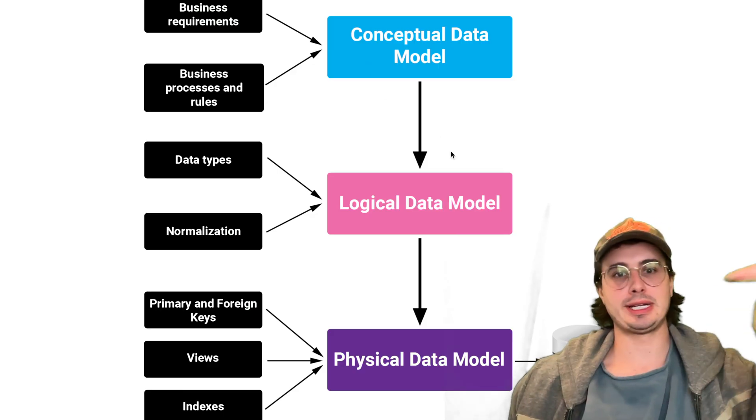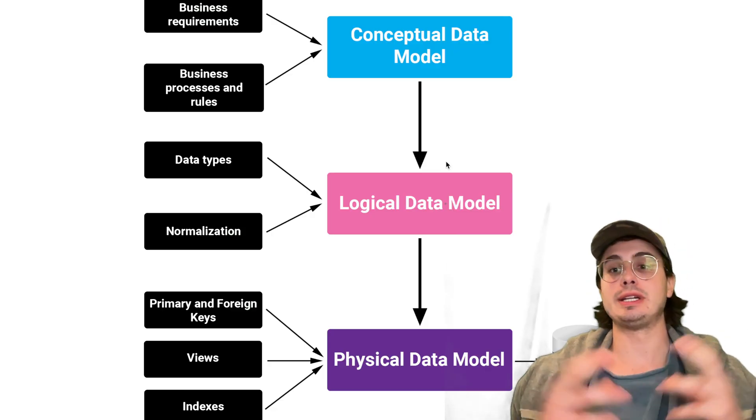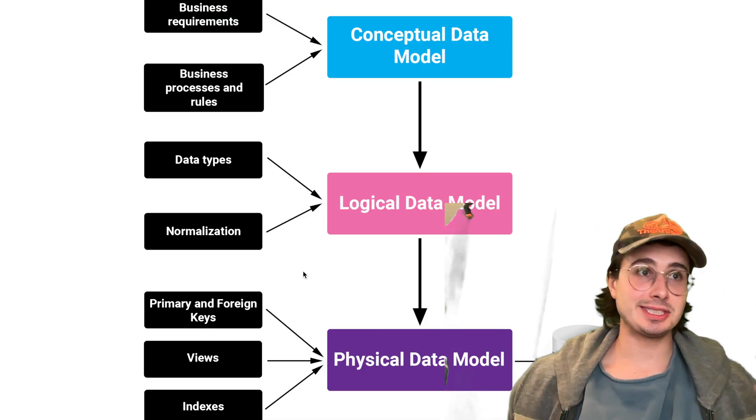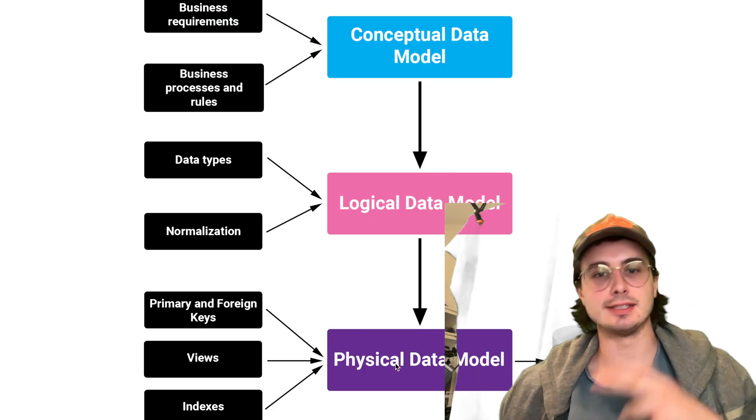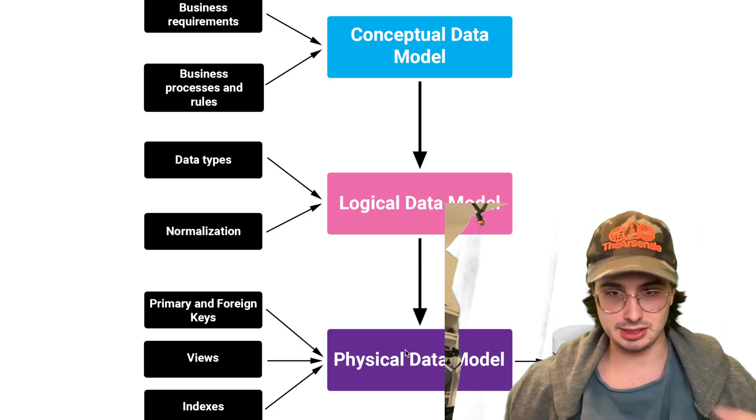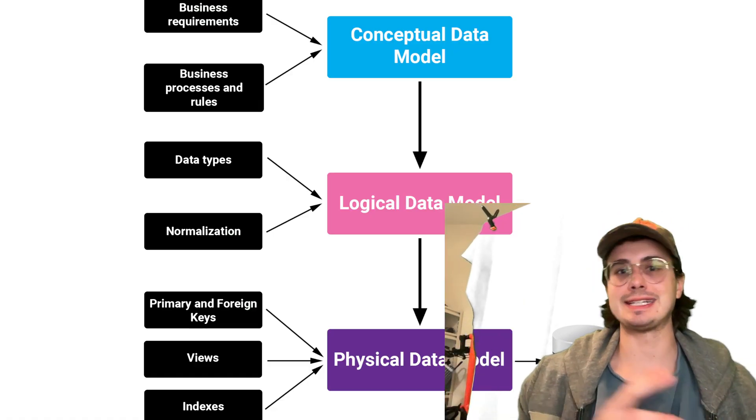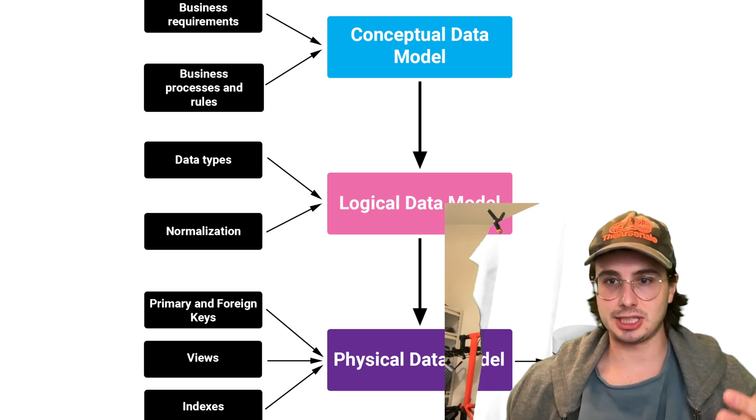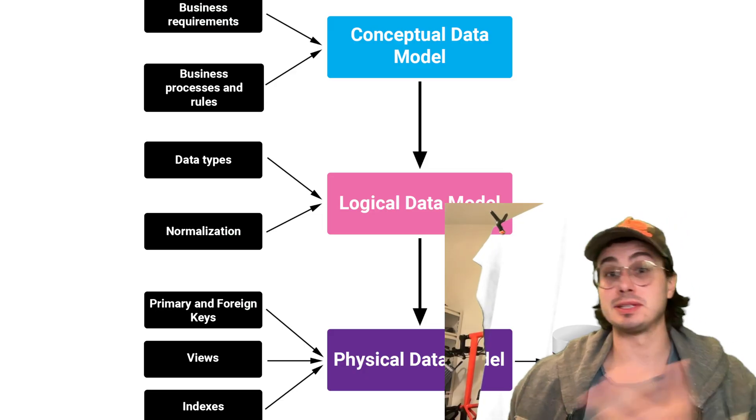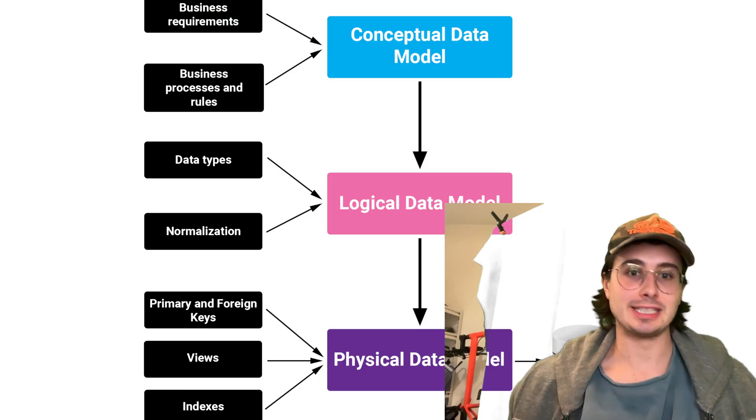Then it moves to a logical model, which is a more detailed structure with attributes, data types, and constraints, but is platform independent. A physical model puts the logical model into practice, including implementation-specific details like indexes, partitions, and storage considerations. The conceptual model answers what the business needs, the logical model answers how by defining attributes and keys, and the physical model answers where and how efficiently.